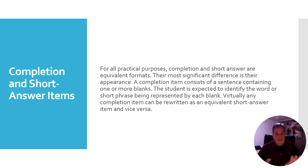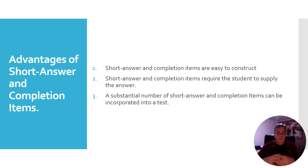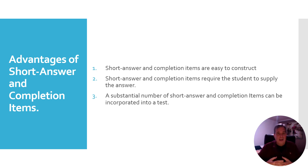Completion and short answer questions are for the most part equivalent — they just look different. A completion item consists of a sentence with one or more blanks, and the student is expected to identify the word or short phrase represented by each blank. Virtually any completion item can be rewritten as an equivalent short answer item and vice versa. Short answer items are relatively easy to write. They require students to supply the answer rather than pick it, and a substantial number can be incorporated into a test without taxing time constraints.